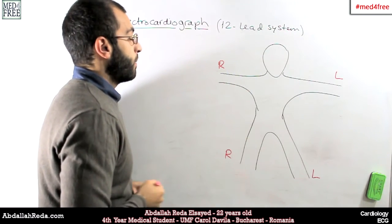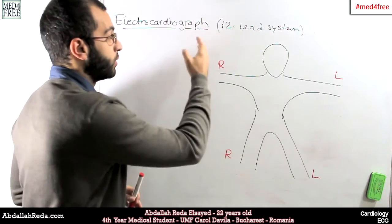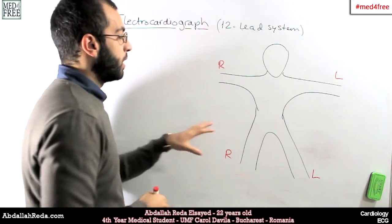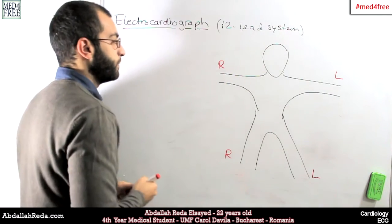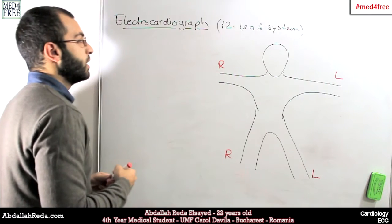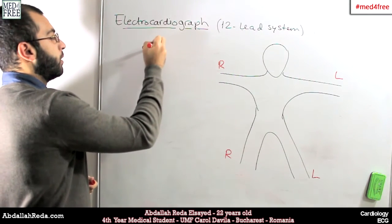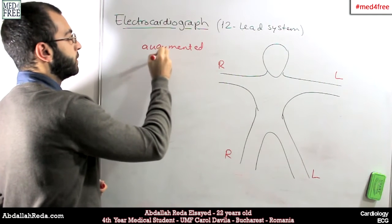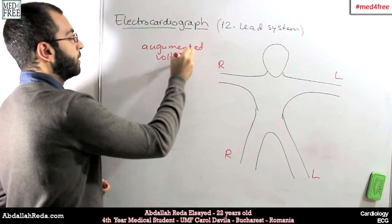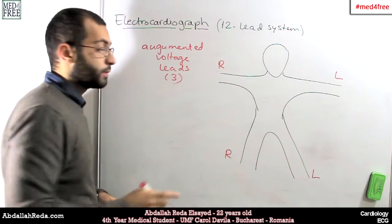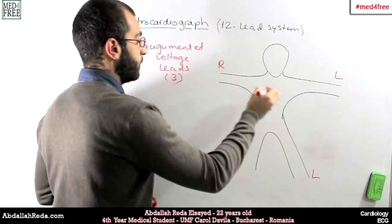Now, how are the leads positioned? How is the 12-lead system put on the patient? Well, first of all, we have three leads that we call augmented voltage leads. Those ones are three leads. They are put as follows.